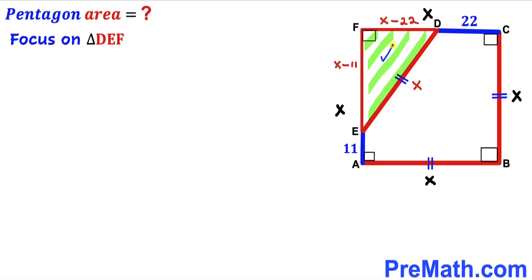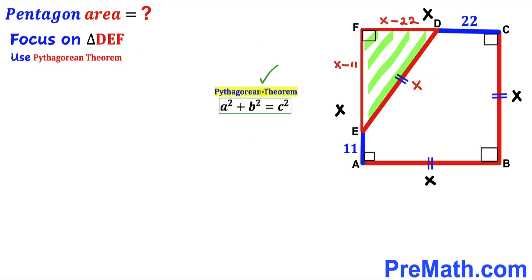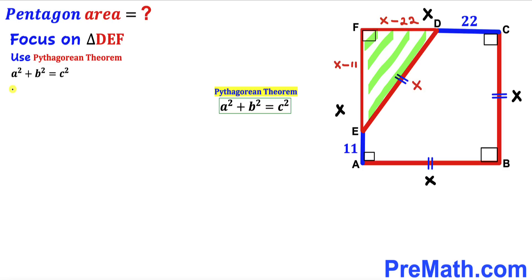Now let's focus on this right triangle DEF. We are going to apply the Pythagorean theorem to solve for X. The Pythagorean theorem is A squared plus B squared equals C squared. In our case the hypotenuse is X whereas our two other legs are X minus 11 and X minus 22. Let's go ahead and fill in the blanks in this Pythagorean formula.